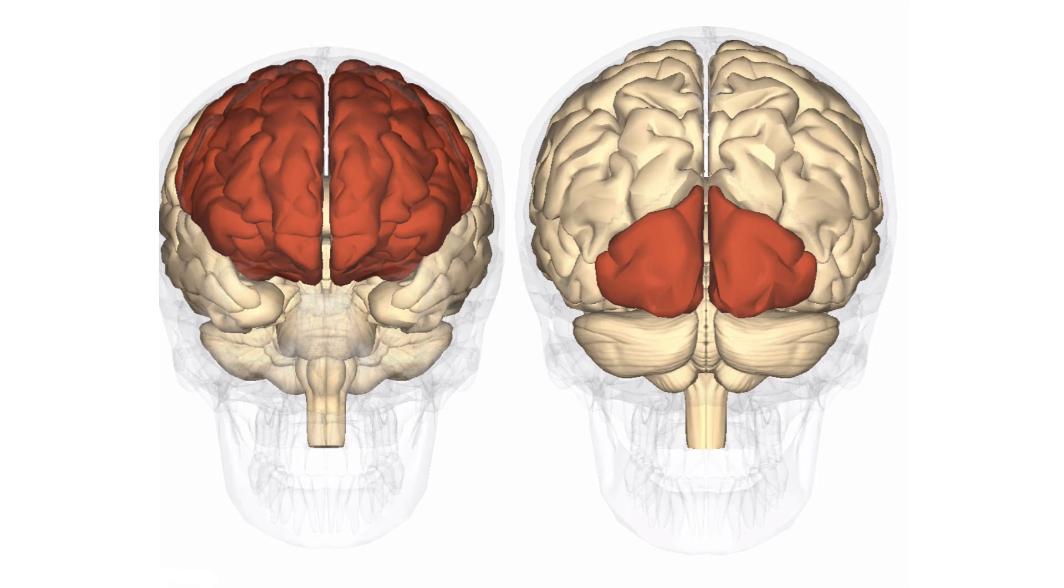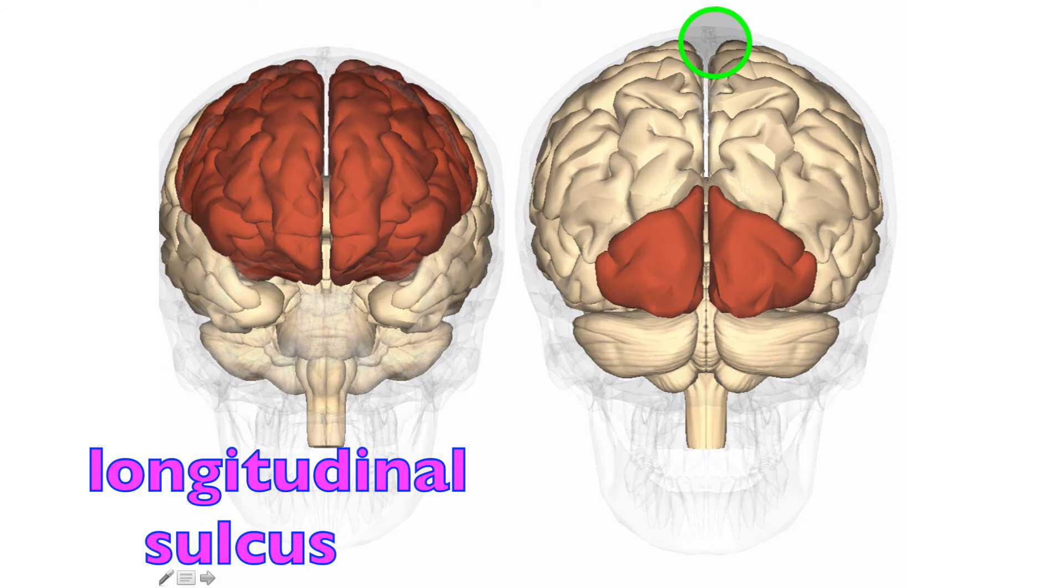Here we can see both an anterior view and a posterior view of the brain. This is the anterior view, this is a posterior view. Running right down the middle of the cerebral hemispheres is the longitudinal sulcus or longitudinal fissure. We can see that posteriorly as well, and we can see it splitting the cerebellar hemispheres in two.